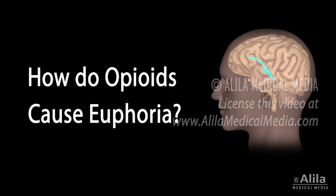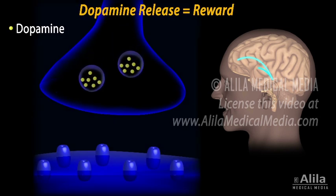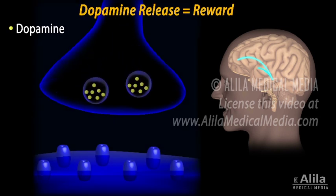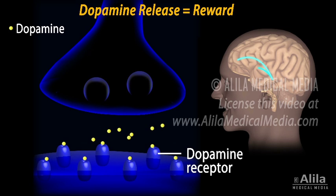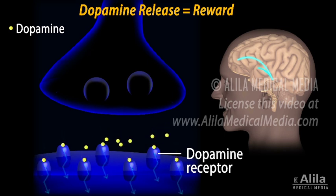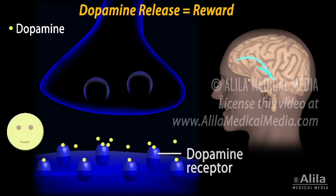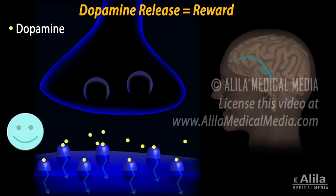Dopamine neurotransmitter is at the basis of the brain reward pathway. Engaging in enjoyable activities causes dopamine release from dopamine-producing neurons into the synaptic space, where it binds to and stimulates dopamine receptors on the receiving neuron. This stimulation is believed to produce the pleasurable feelings or rewarding effect.